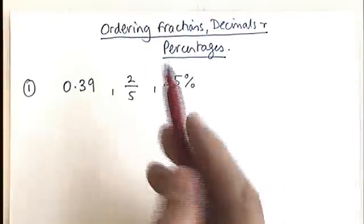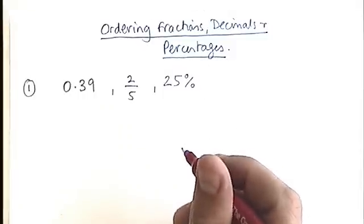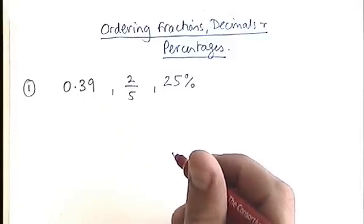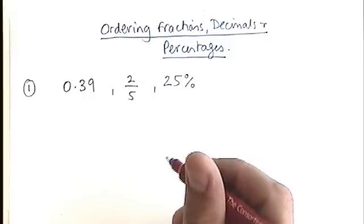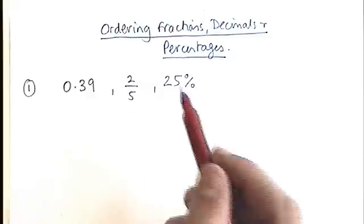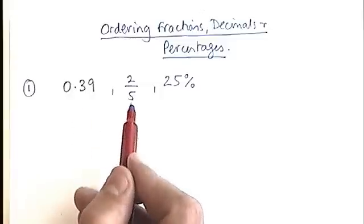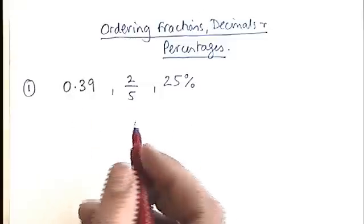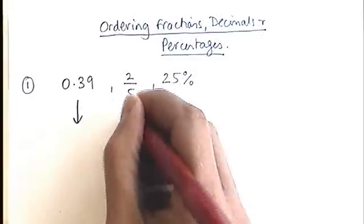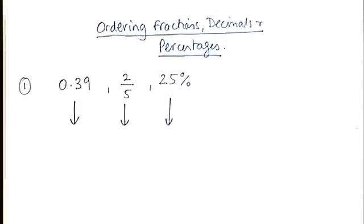Hi, this video is going to help you to order fractions, decimals and percentages. This is quite a common question in your GCSE exams. Basically what you need to do for every question like this is try to put the numbers into the same format. You could choose either a decimal, a fraction, or a percentage. The easiest one to compare is percentages, because it will be obvious which is the biggest and which is the smallest.